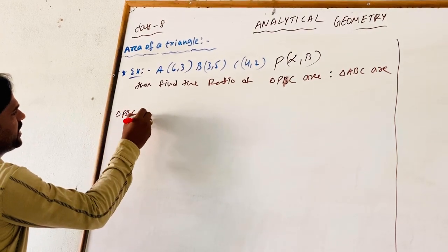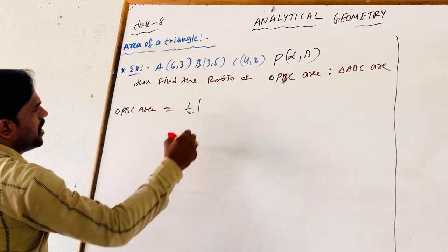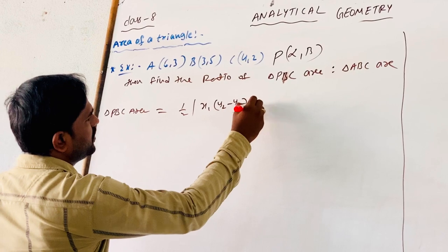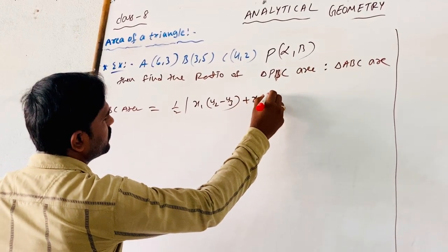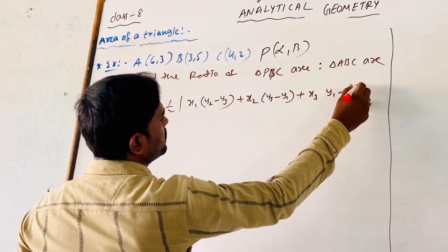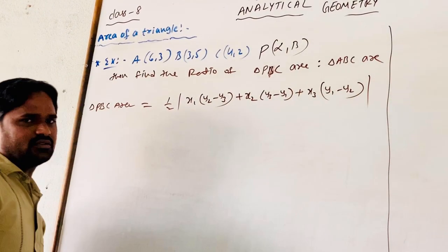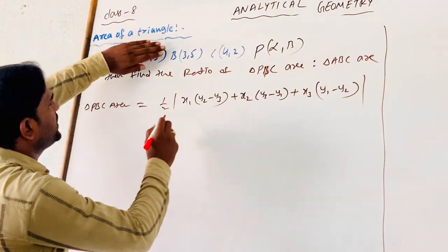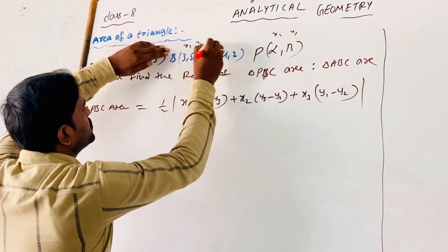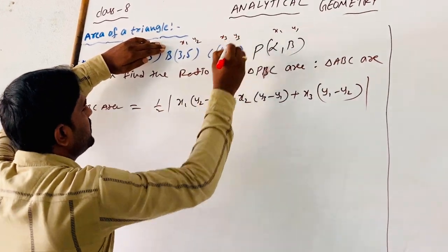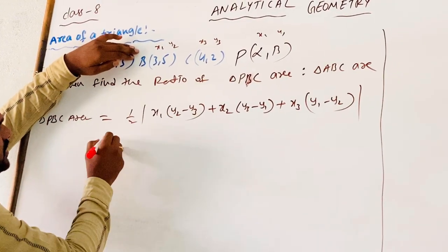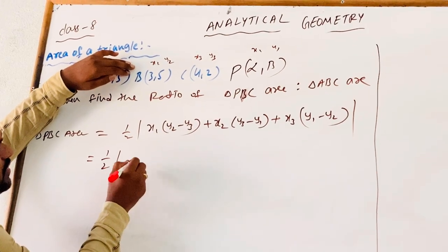Triangle PBC area is equal to: the formula is half into modulus of x1(y2 − y3) + x2(y3 − y1) + x3(y1 − y2). For triangle PBC, there is no A — the vertices are P, B, C. Taking x1,y1 as P; x2,y2 as B; x3,y3 as C, and substituting: x1 means α.